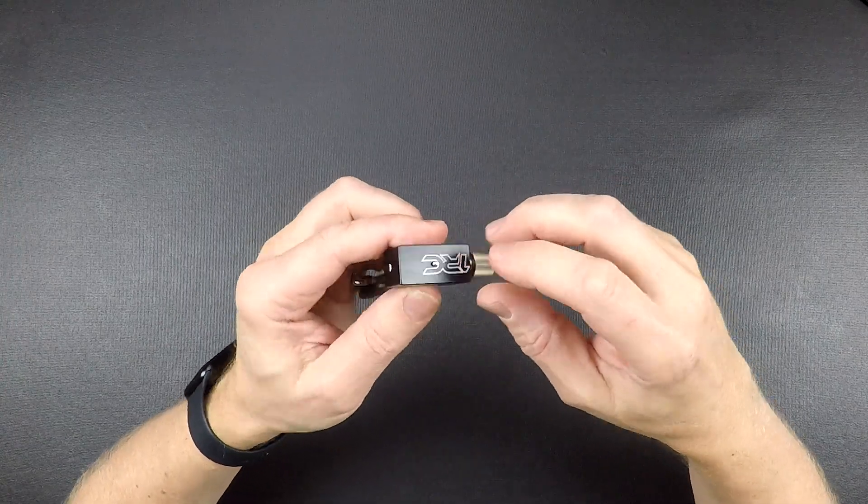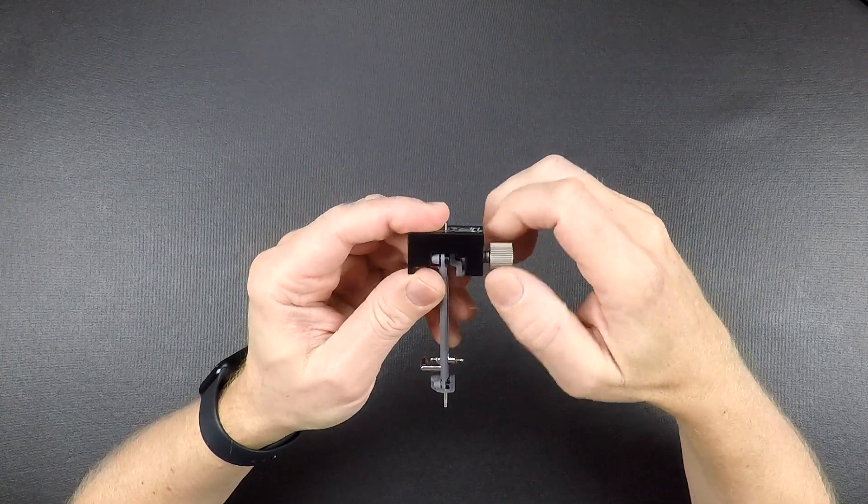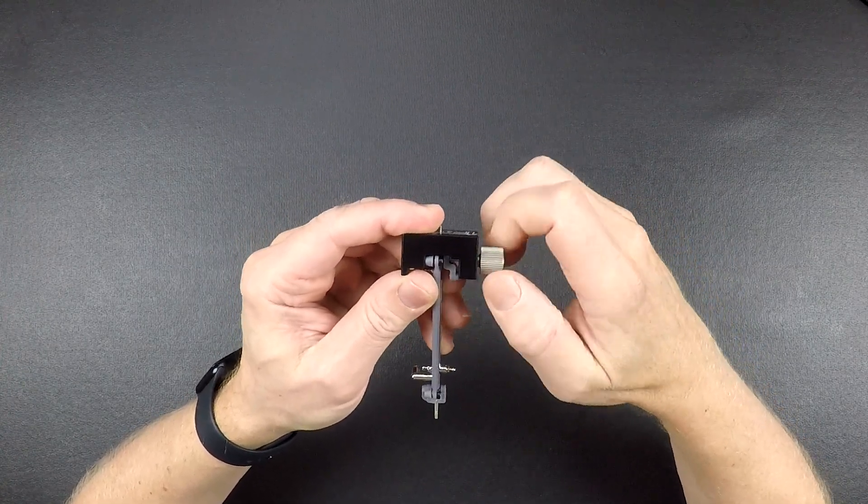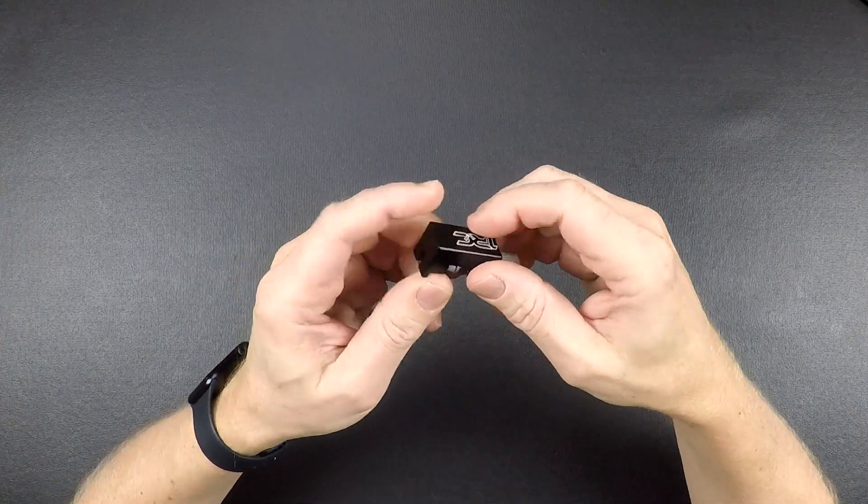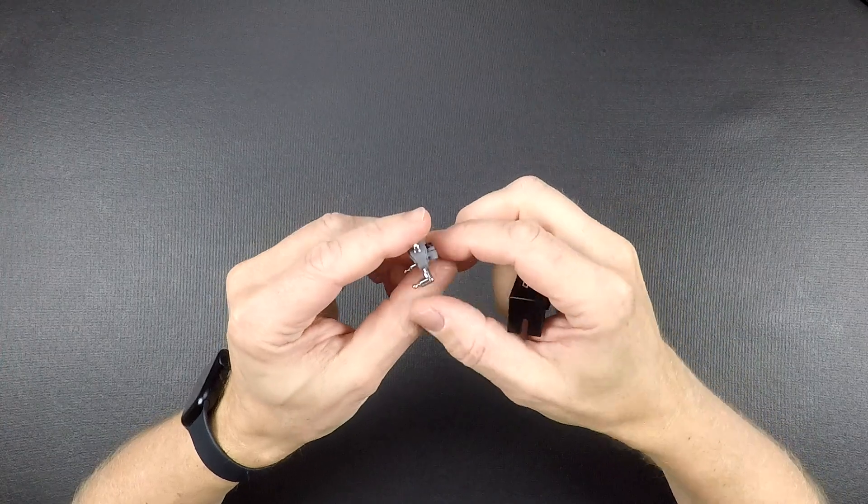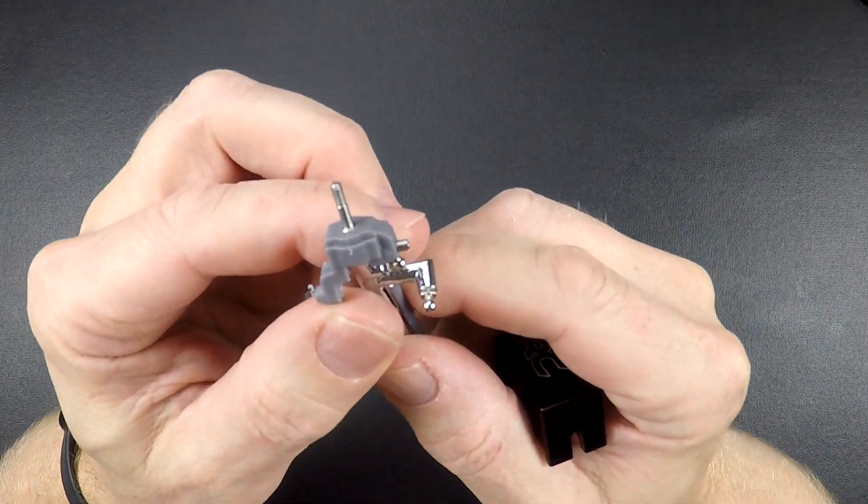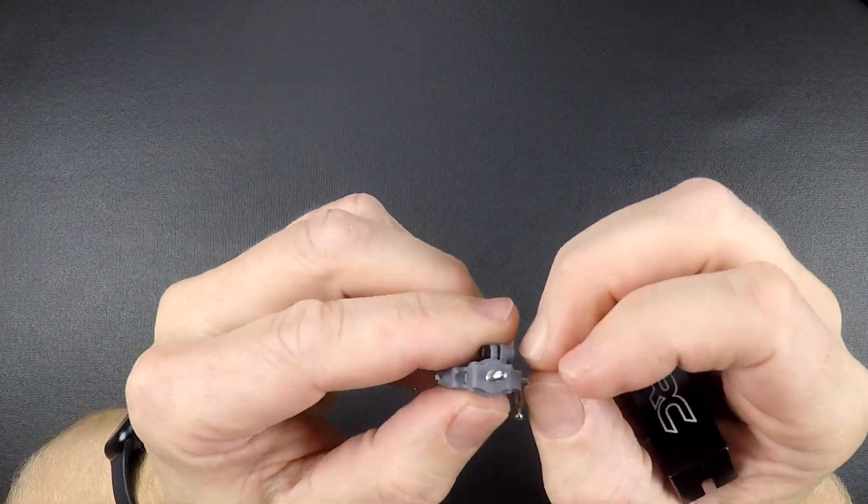We're not going to put the nut on just for the speed of the video, but you should. Then simply turn this down and you'll feel some resistance as you turn the knob. Just keep turning and it'll push that down, then back this out and pull it out. It pushes the pin down enough so you can grab onto it with a pair of pliers and pull that out.